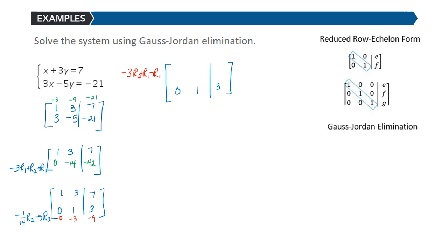So now I'm going to add those entries to row 1. So 0 plus 1 is 1. Negative 3 plus 3 is 0. And negative 9 plus 7 is negative 2.